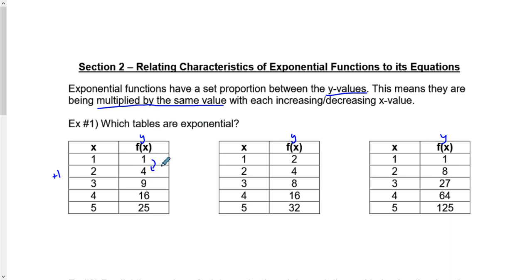1 to get to 4 is multiplying by 4. 4 to get to 9 is multiplying by 2.25. 9 multiplied by 1.7 repeating gives us 16. And 16 multiplied by 1.5625 gives us 25, which means that proportion...